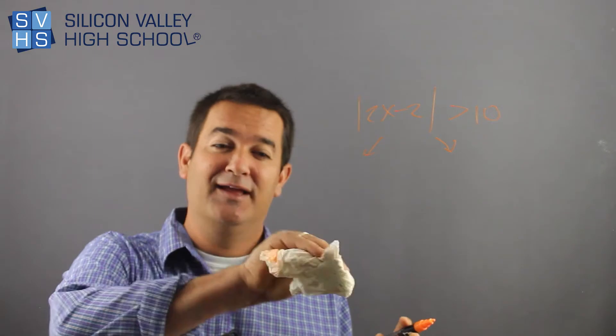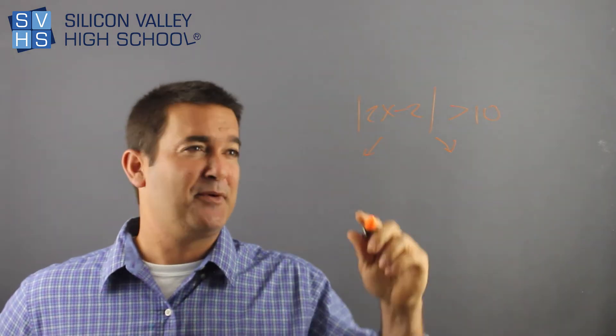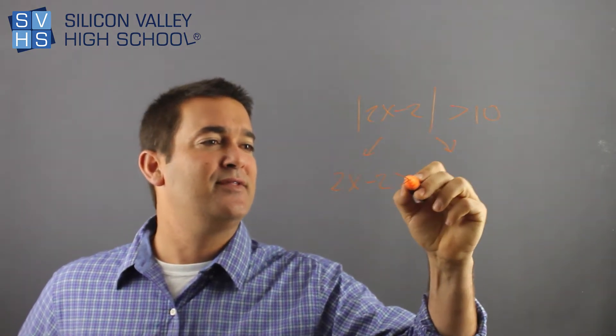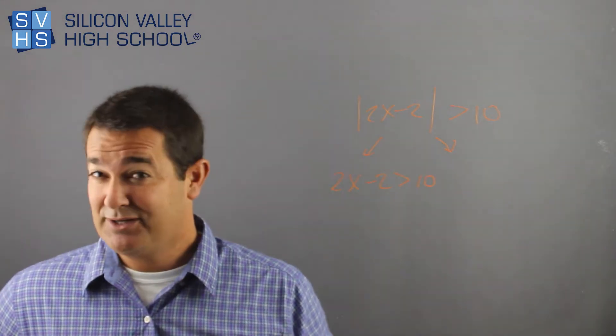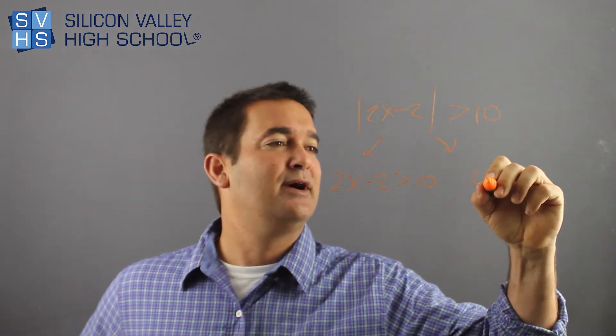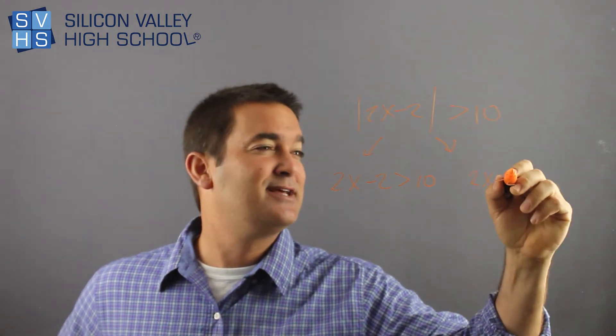And so far, you shouldn't even be thinking. It should be like an automated response. So you have 2x minus 2 greater than 10. Remember, the one on the left, you don't change at all. Now this one, 2x minus 2, change the sign, change the sign.